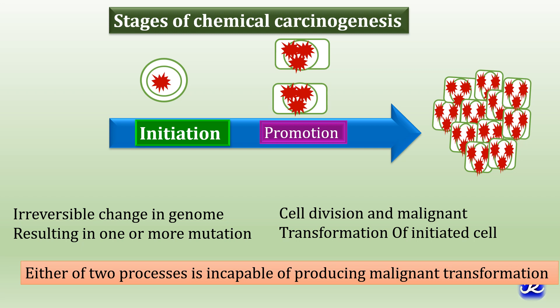For example, benzopyrene is a known chemical carcinogen which acts as an initiating agent. However, if it is painted once on the skin of an animal it does not lead to cancer. But if croton oil, which is a promoting agent, is applied several times after benzopyrene application, the animal develops a tumor. Croton oil alone is not capable of causing cancer, so both benzopyrene and croton oil together can cause cancer.